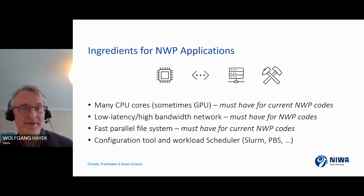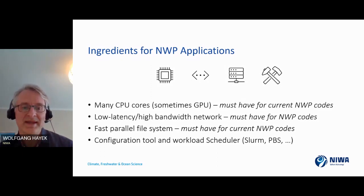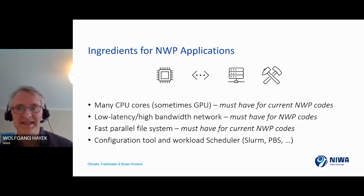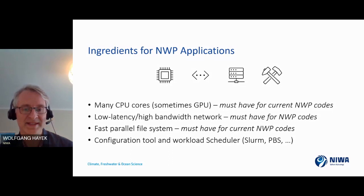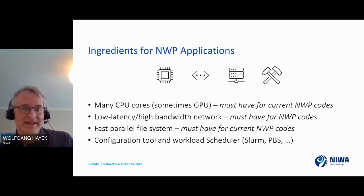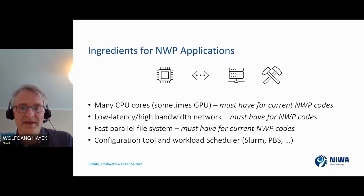Another important ingredient is a fast parallel file system — on our current HPC this is GPFS (aka Spectrum Scale) or Lustre. The current code requires this to write output. In the future there's talk of writing directly to object stores, but for now a parallel file system is needed. Finally, you need a workload scheduler like Slurm or PBS, which cloud vendors do support, making it much easier coming from the HPC world.